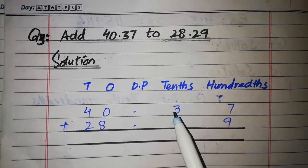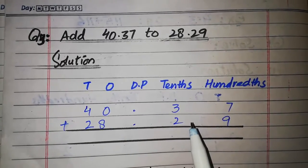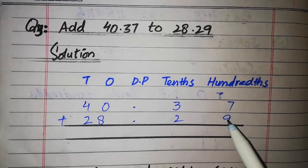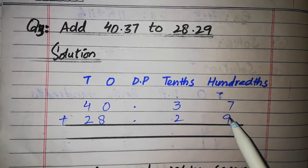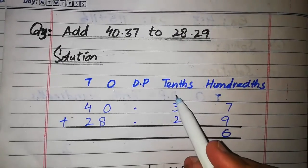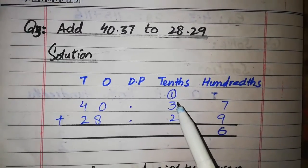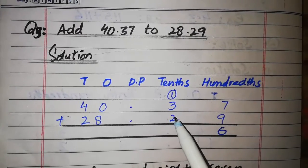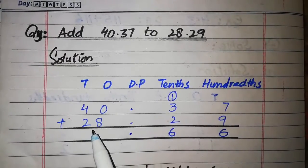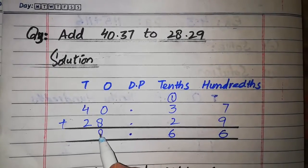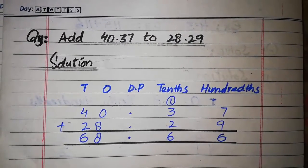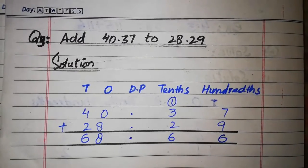اسی طرح place value لگانی ہے: decimal کی نیچے decimal، integral part اور fractional part۔ Ones, tens, اور tenths, hundredths۔ پہلے hundredths column: seven plus nine is equal to sixteen — six hundredths میں لگائیں اور one, tens میں carry ہو جائے گا۔ Tenths: one plus three plus two is equal to six۔ Point کی نیچے point۔ Ones: zero plus eight is equal to eight، اور four plus two is equal to six۔ So answer is 68 point 66.